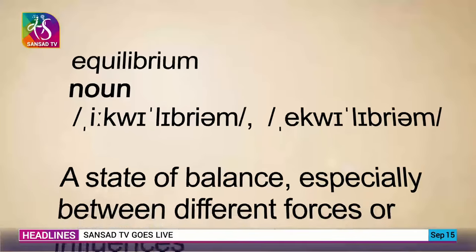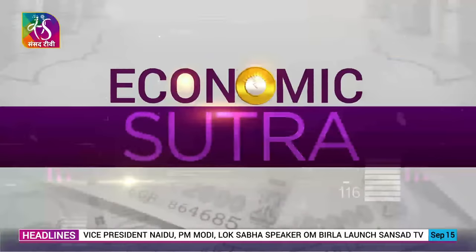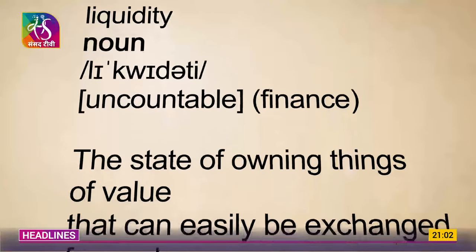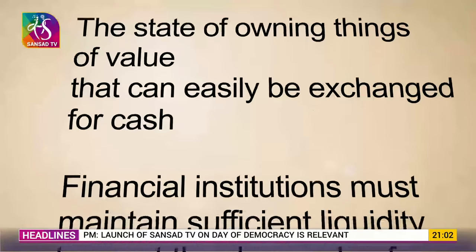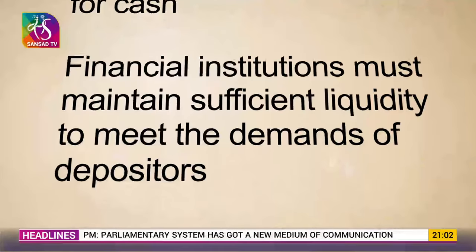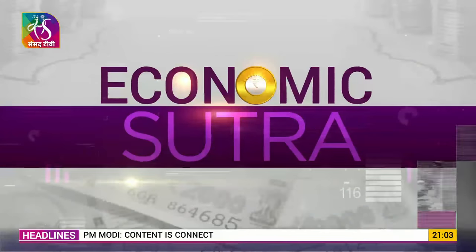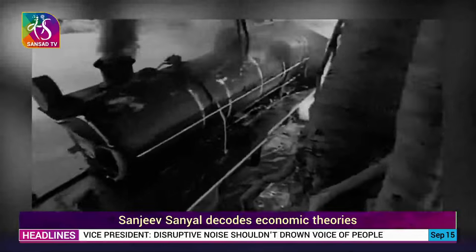Not surprisingly, many of the terms you learn in conventional economics come from Newtonian physics — terms like equilibrium, or the levers of monetary and fiscal policy, or the term liquidity, which is obviously a hydraulic term. These are useful models and conceptions, but they do lead you to begin to think of the economy as some sort of a gigantic steam engine running along a fixed path — rails — which we may call the trend line.